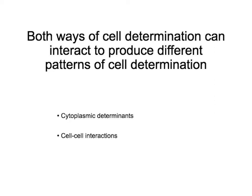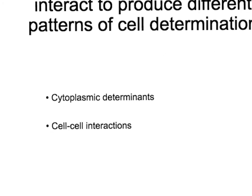These two pathways can interact to produce an even richer array of options for the cells. So cells can have a specific cytoplasmic determinant and a specific type of cell interaction, and then they can become a certain type of cell — different from what they'd become with just one type of determinant and one type of interaction. This will be more evident in the next slide.